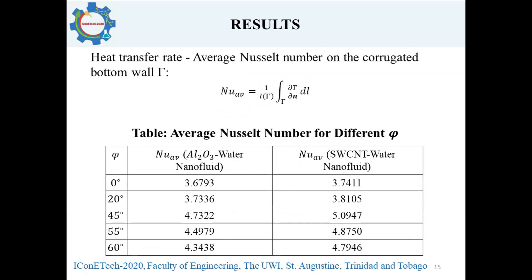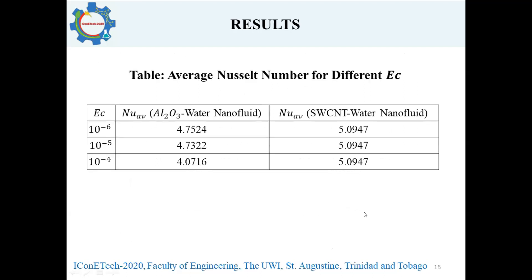Examining the influence of sidewall inclination angle on heat transfer rate — measured using the average Nusselt number on the corrugated bottom wall — we found that the average Nusselt number is highest when the sidewall inclination angle is near 45 degrees, for both alumina-water and SWCNT-water nanofluids. The average Nusselt number is reduced with an increase in Eckert number for the alumina-water nanofluid; however, there was no significant change observed for the SWCNT-water nanofluid.